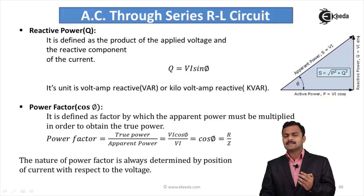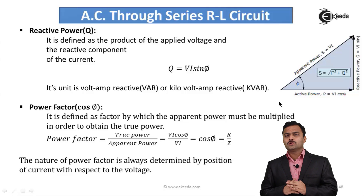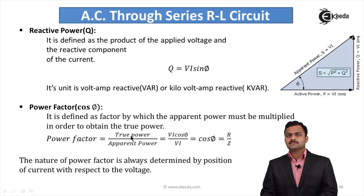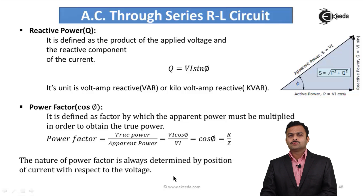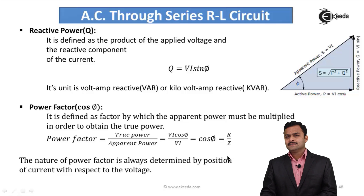Along with P, there is also Q, making S the total power supplied, but the actually consumed power is P. The factor that decides how much of the supplied power S is actually consumed as P is the power factor, denoted cosφ. Power factor is defined as the factor by which apparent power must be multiplied to obtain true power: power factor = true power / apparent power = VI cosφ / VI = cosφ, also equal to R/Z from the impedance triangle.